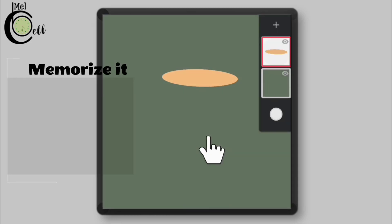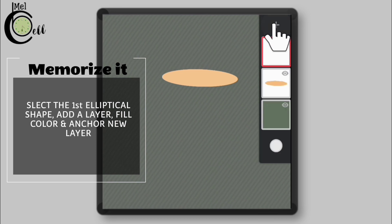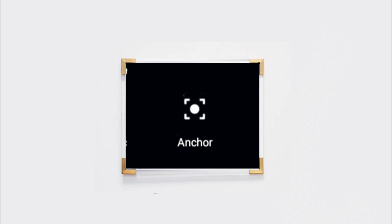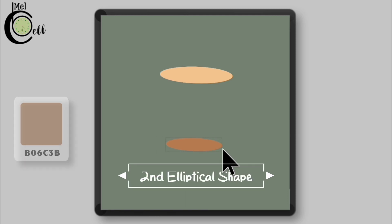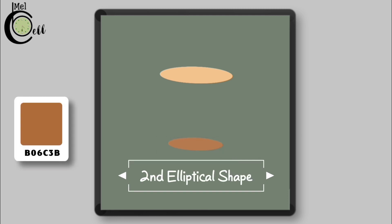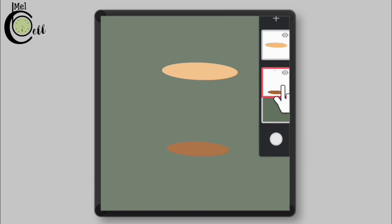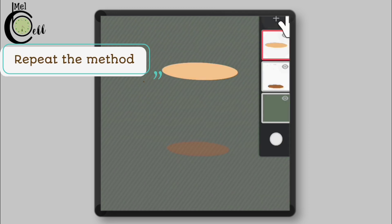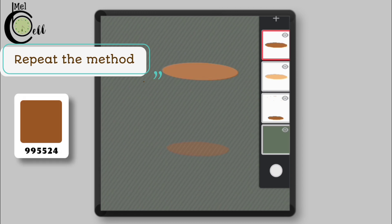Commit this method to memory as it will be repeated. Select the first elliptical layer, add a layer and fill color. Now anchor it. Select the first elliptical layer again, add a layer and fill color.